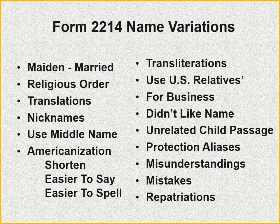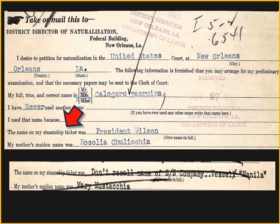I tried to take all the records and pigeonhole them into categories. The remainder of these YouTube videos — Parts 1, 2, and 3 — will try to categorize people, though records may fall under more than one category. Going back to the name section, below 'I used that name because' was a question about the name on your steamship ticket. This was also ambiguous, and people sometimes put the ship's name rather than their name. One person said 'Don't recall the name of the company, but the vessel was the Manila.'